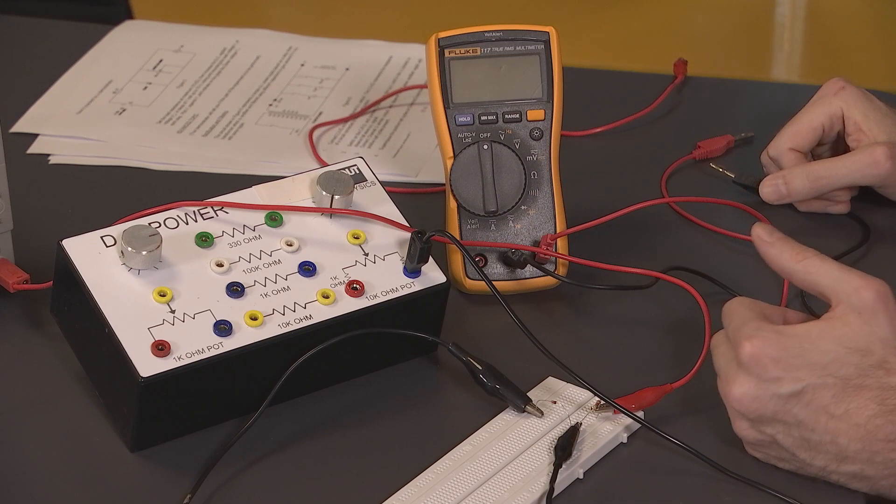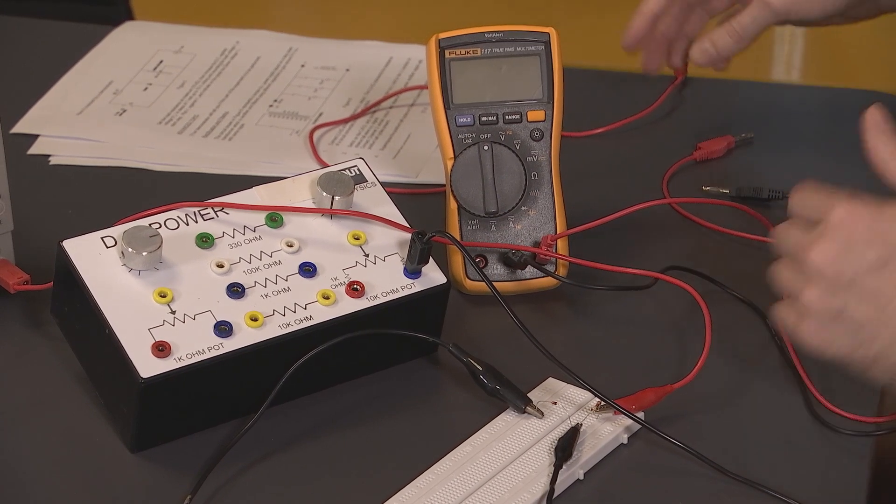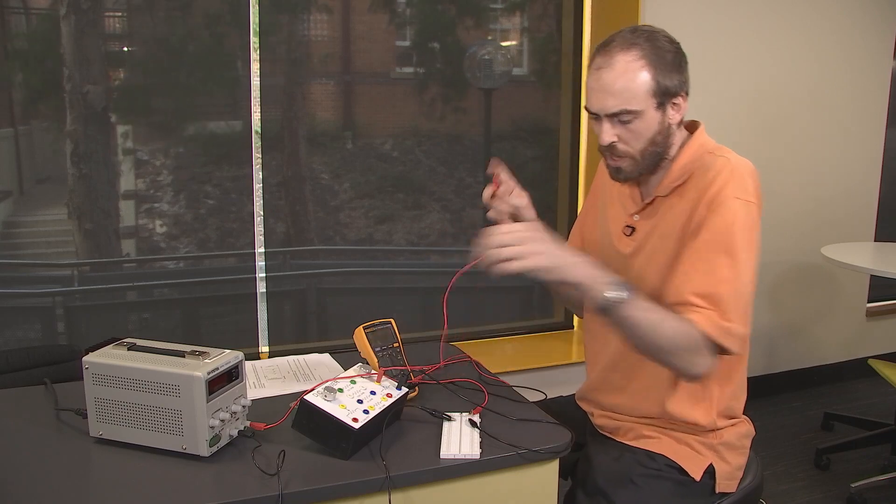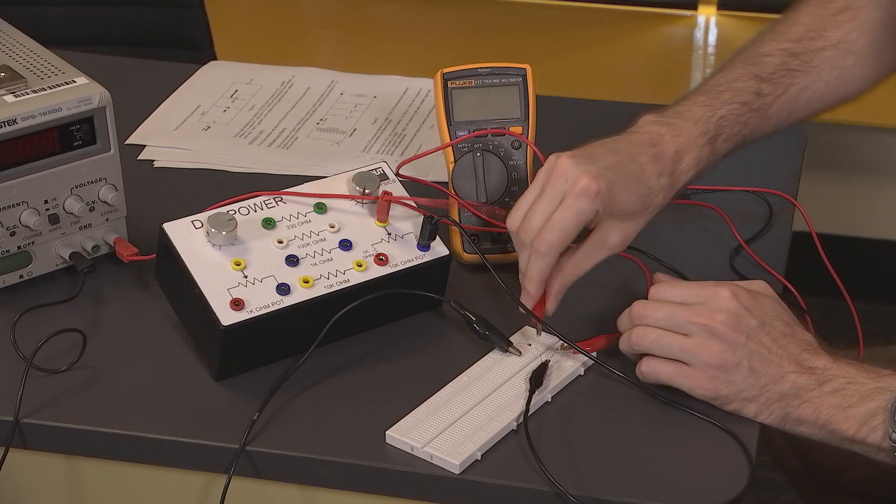I can then take another lead from the center of the potentiometer, and that can go to the anode of the diode.